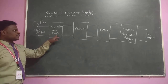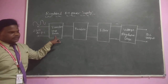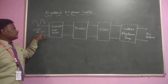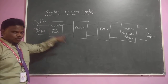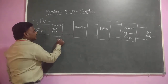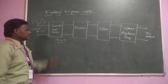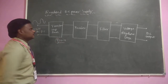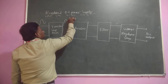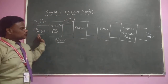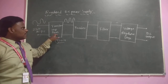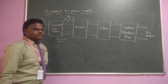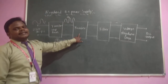Initially we apply the input to the transformer. Here I am using a step-down transformer. I am applying 230 volts AC supply. For example, if I am using a 9-0-9 type of transformer, then this 230 volts AC voltage is stepped down to 9 volts AC. So the output of this transformer is 9 volts AC - a step down from 230 volts to 9 volts occurs here. This 9 volts AC is then given to the rectifier circuit.